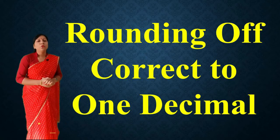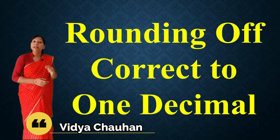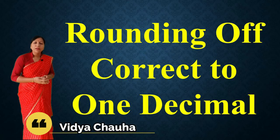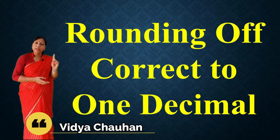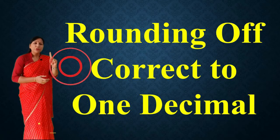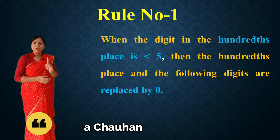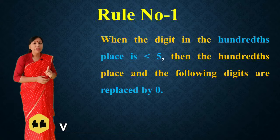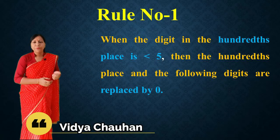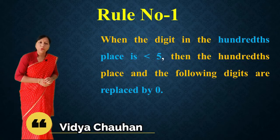First, let us see the rule for rounding correct to one decimal place. If any decimal number is given and you have to round it off correct to one decimal place, the rule is similar to what we discussed earlier but with a little twist. Rule one: when the digit in the hundredths place is less than five, the hundredths place and all following digits are replaced by zero.